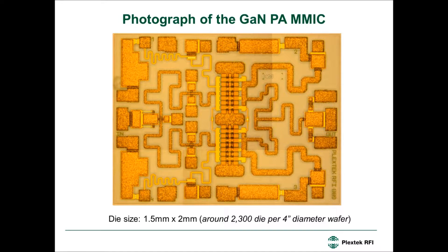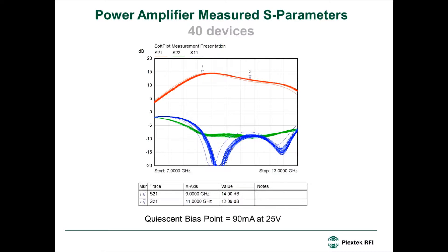The completed layout was fabricated at UMS. This is a photograph of the fabricated GaN Power Amplifier MMIC — a quite compact design, 2 mm in X and 1.5 mm in Y, giving around 2,300 die per 4-inch diameter wafer. The devices were evaluated on-wafer at UMS. Here is some small signal data at the quiescent bias point of 90 milliamps, corresponding to the 37.5 milliamp per millimeter mentioned earlier. Gain is about 14 dB at the bottom of the band and slightly better than 12 dB at the top — a good level of gain.